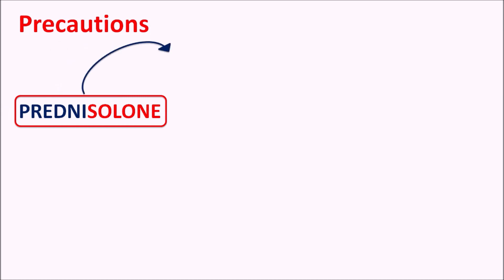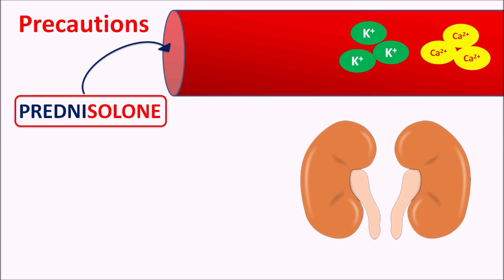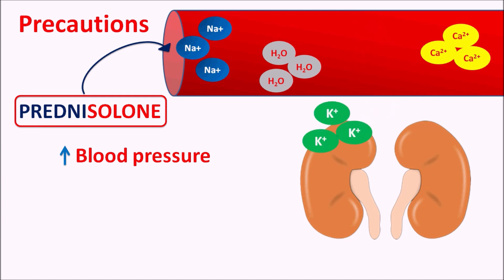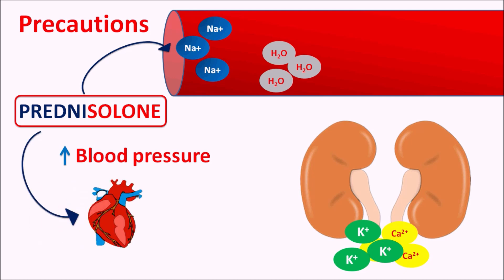Prednisolone can affect electrolyte levels, including potassium, calcium, sodium, and water levels. The excretion of electrolytes through the kidneys is affected. Sodium and water are absorbed, increasing blood pressure as well as fluid retention. However, minerals such as potassium and calcium are excreted through the kidneys, reducing their levels. This hypokalemia and hypocalcemia may precipitate congestive heart failure as well as cardiac arrhythmias in patients. Electrolyte levels should be closely monitored when this drug is prescribed for chronic periods.